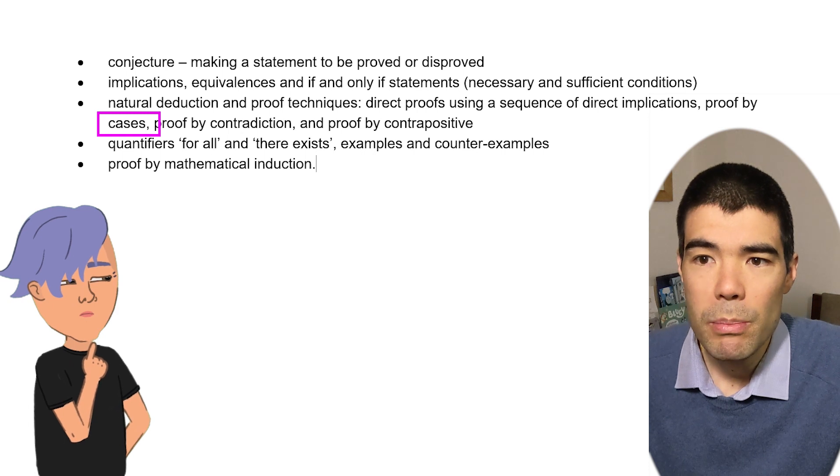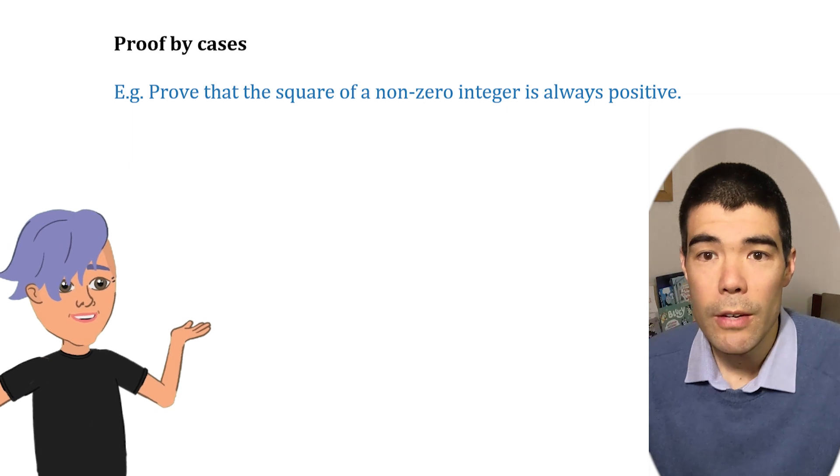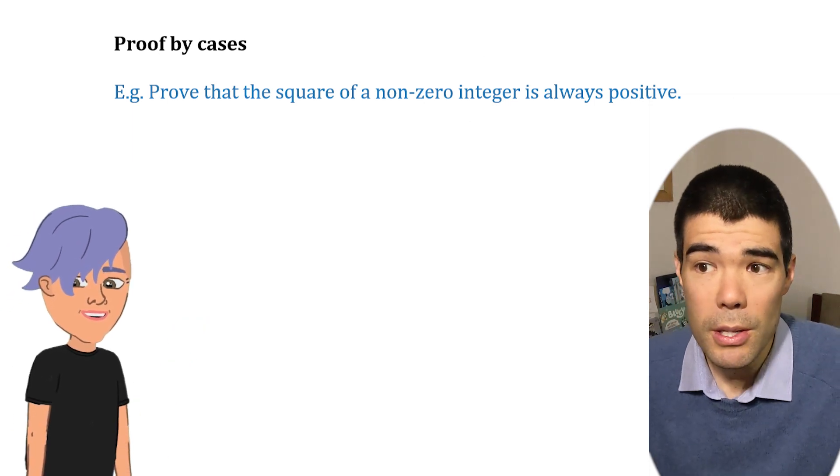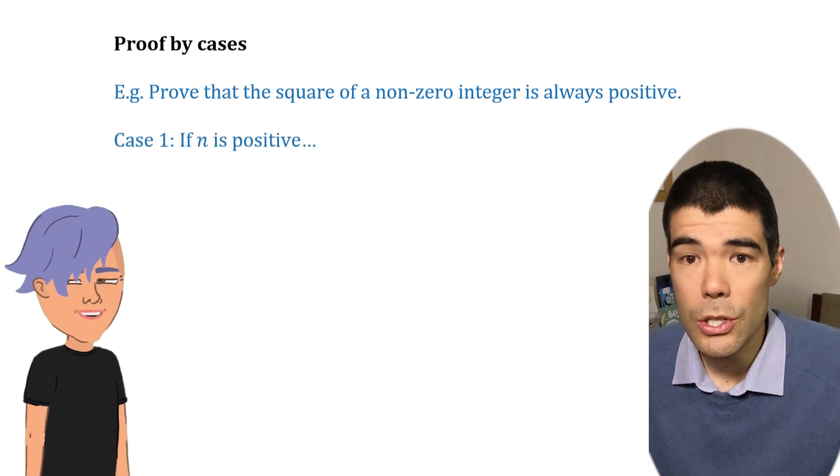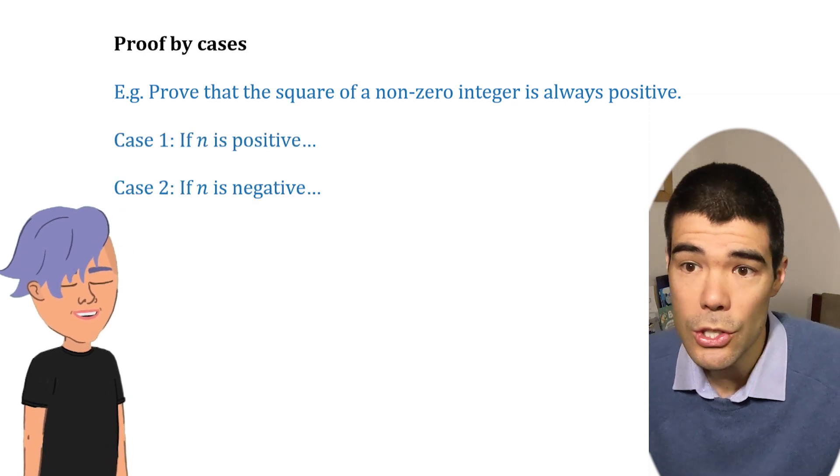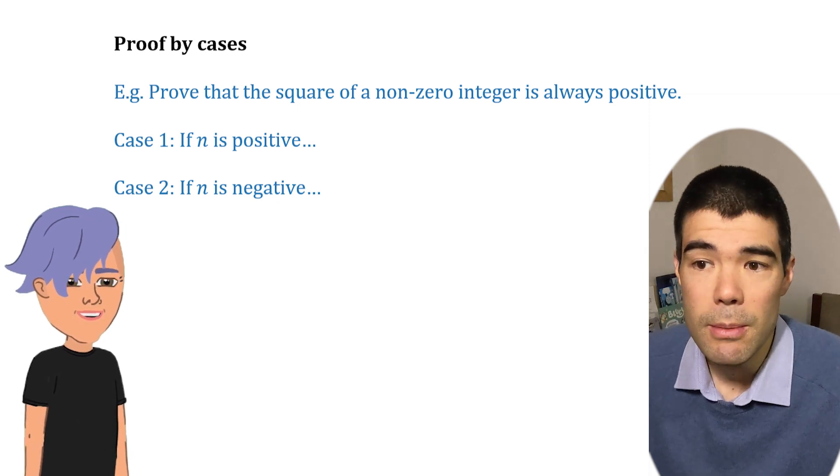This is where you split a proposition up across all possible cases. So, for example, the statement the square of a non-zero integer is always positive. You could split up into two cases. Case one, the integer is positive. And case two, the integer is negative. And show that in both cases, the square turns out to be positive.